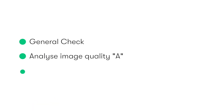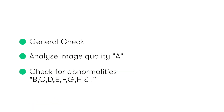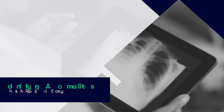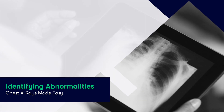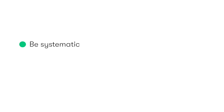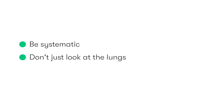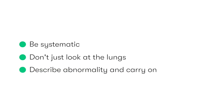Now that we've undertaken the general check and analysed the image quality, we're okay to proceed to look at the anatomy of the chest x-ray and also look for any abnormalities. It's really important to be systematic when we review the anatomy and look for any abnormalities — so as tempting as it is, don't just focus on the lungs. By being systematic, if you do identify an abnormality you can make a note of it but carry on and complete your full assessment, meaning you're much less likely to miss anything else important.